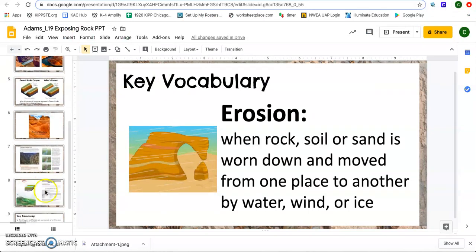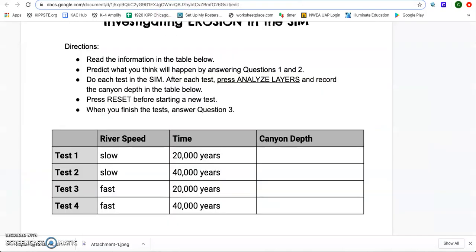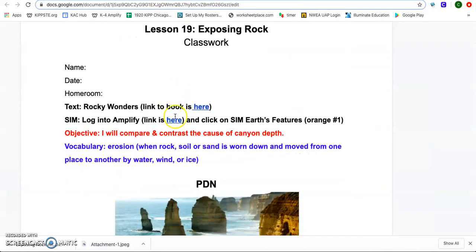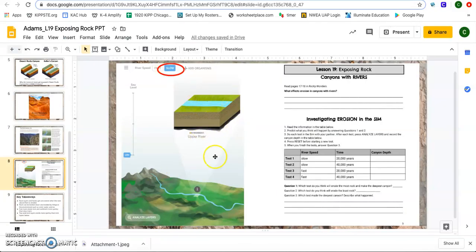Now getting to our sim. When you get into the sim, you want to go ahead and click your link in your classwork to get to the sim. Here it's going to tell you that you are going to click the orange number one, Earth's Feature Simulation. After you do that, and we are very familiar with this one because we've been doing this one a lot, you are going to come into the sim. Do not change the mode. You need to make sure you stay in mode one. Do not switch it to mode two because that is not going to help you with your experiment today.